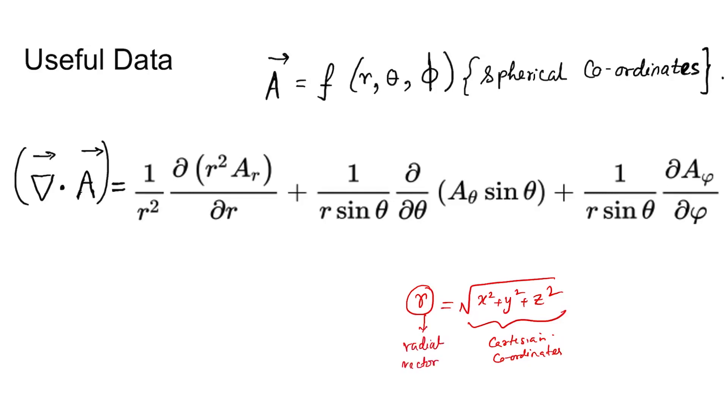The vector A is in spherical coordinates. The divergence of A is given by this formula: 1 over r squared times d/dr of r squared A_r, plus the theta and phi components.